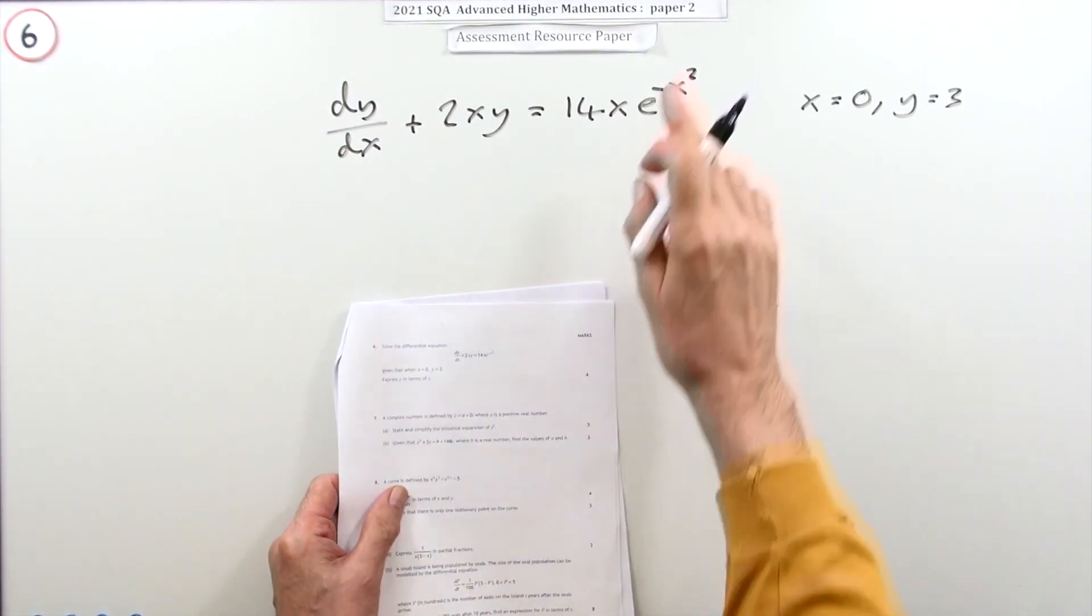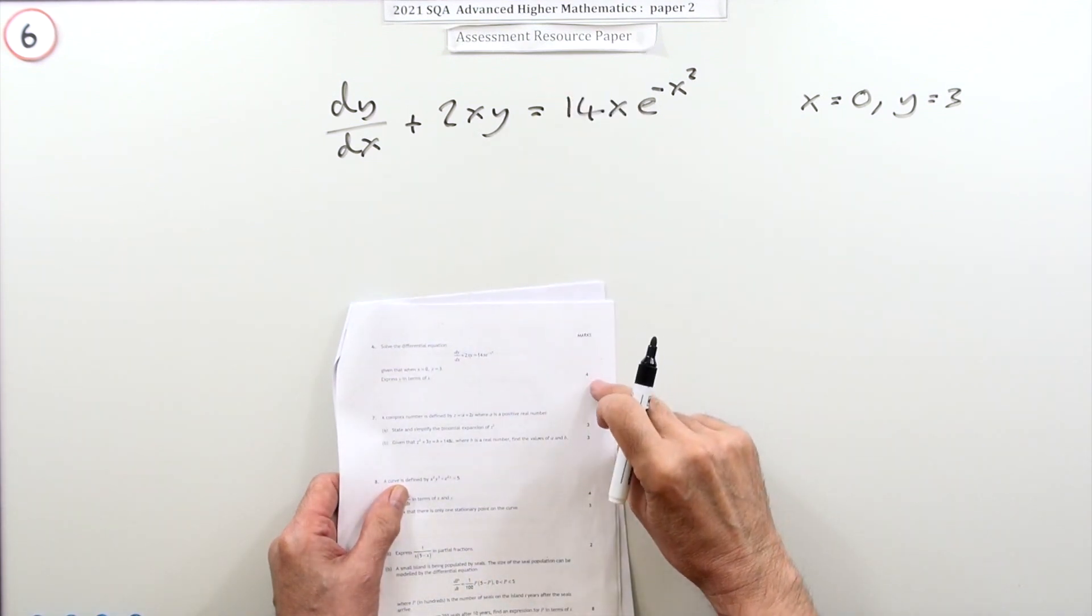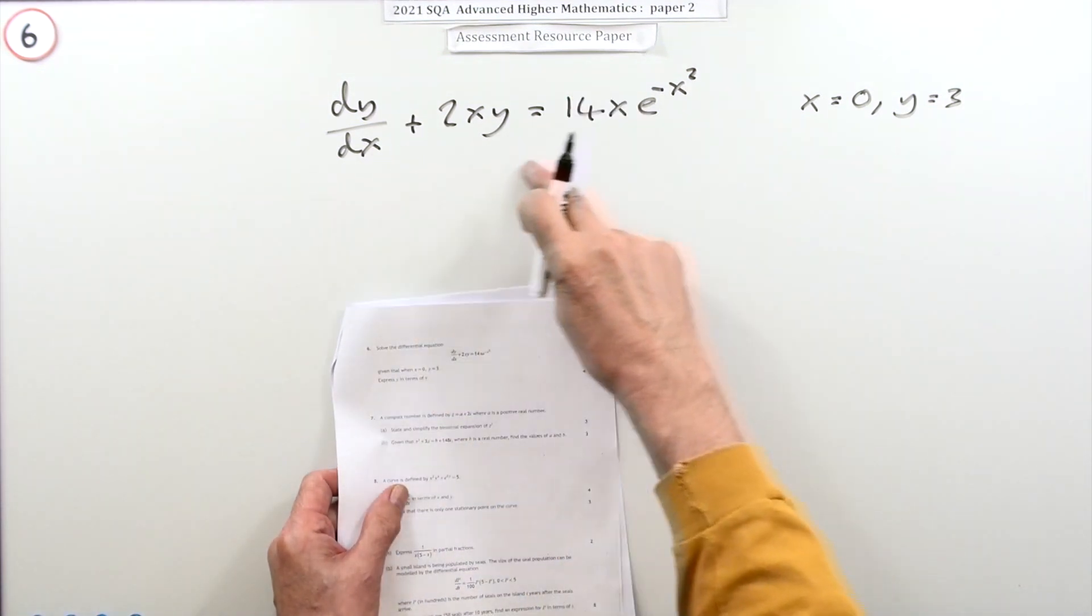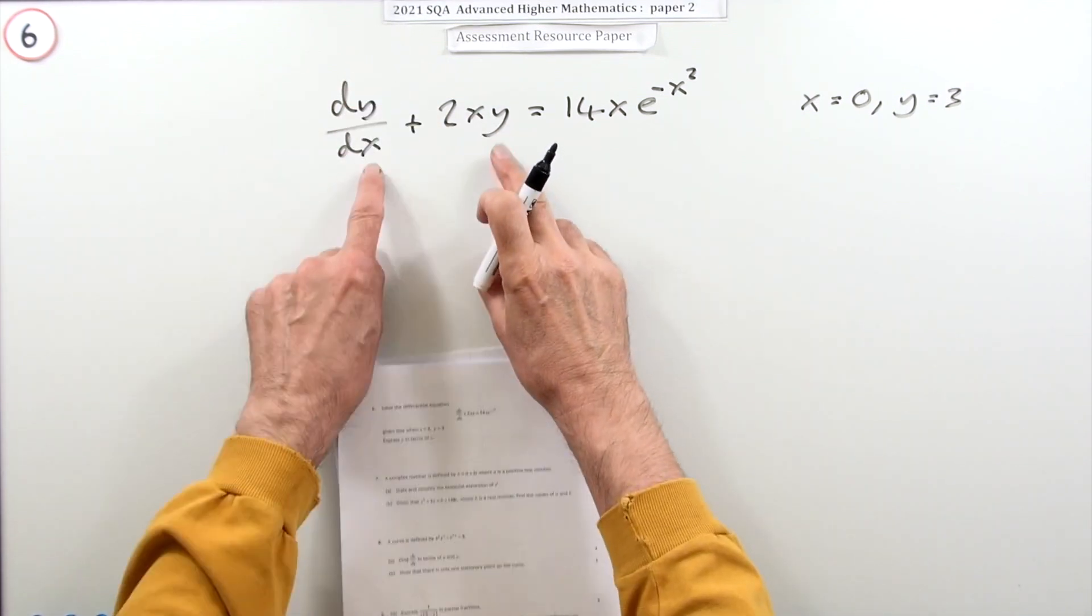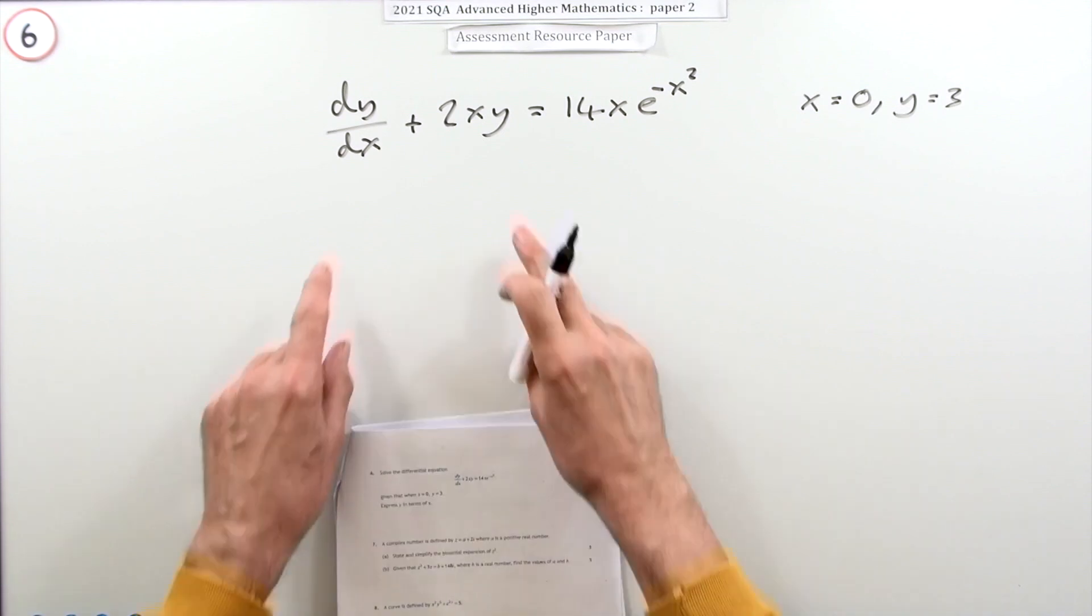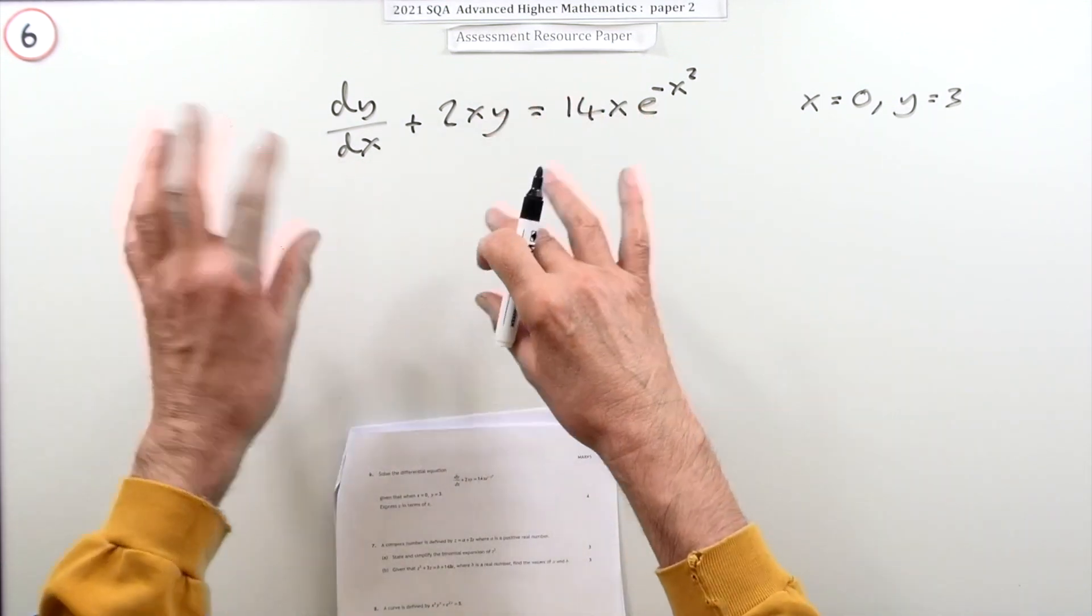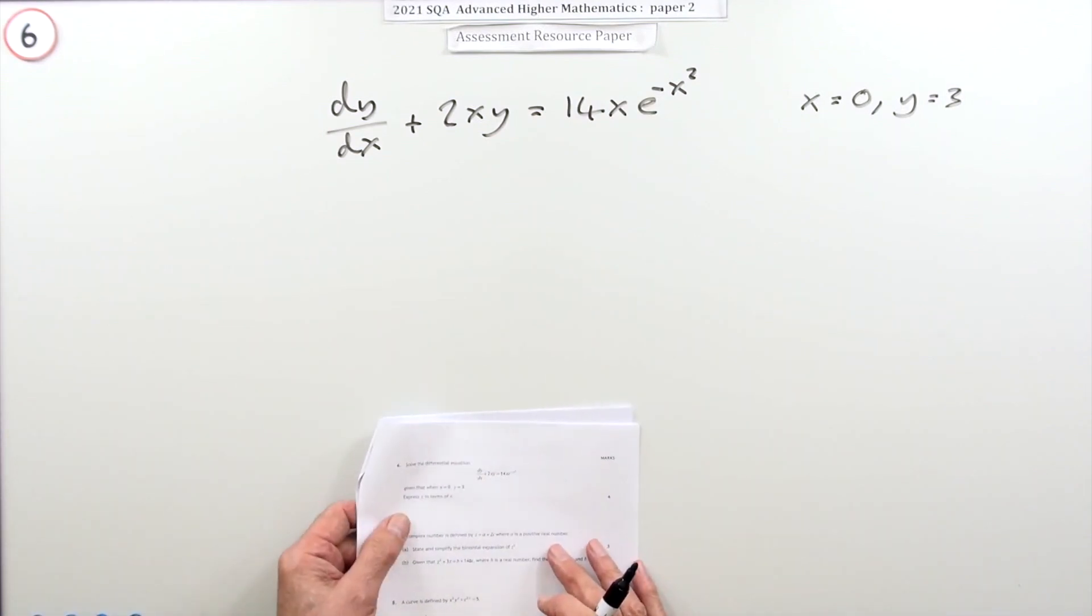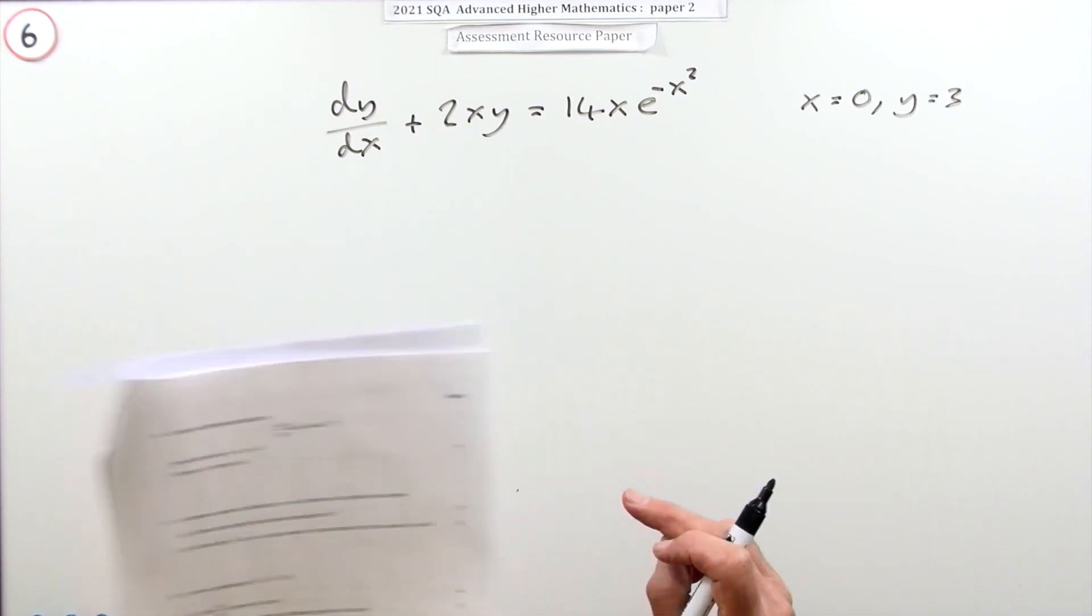So number six from paper two of the 2021 Advanced Higher resource. Solve this differential equation, this first order linear differential equation. Linear because the y and dy only appear as themselves, they're not squares or square roots or so on, given these initial conditions. Express y in terms of x for four marks.